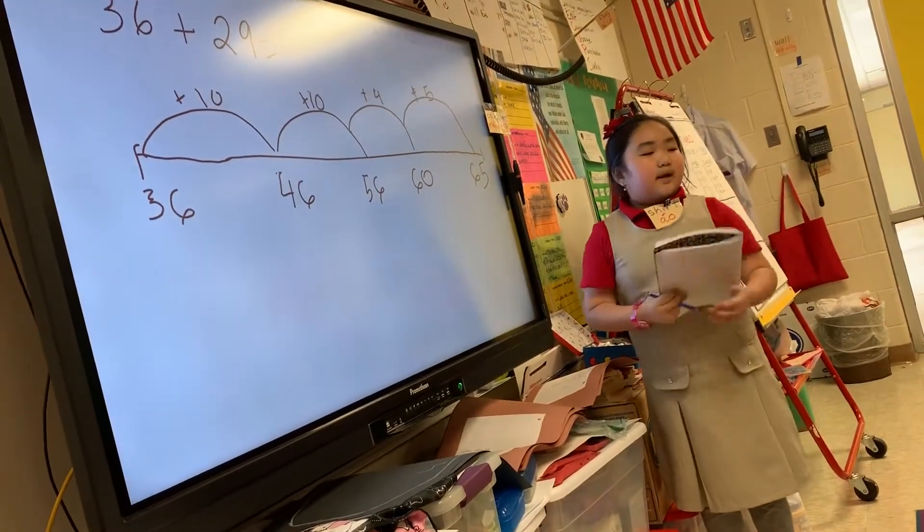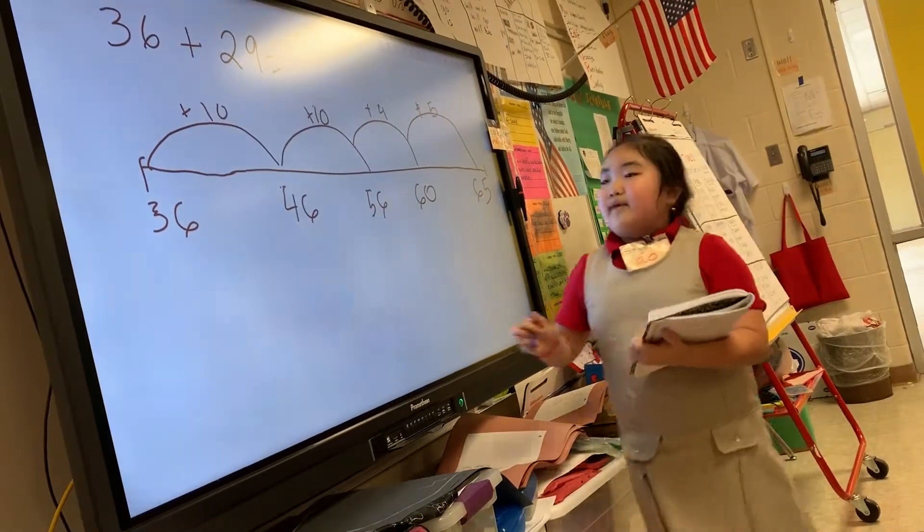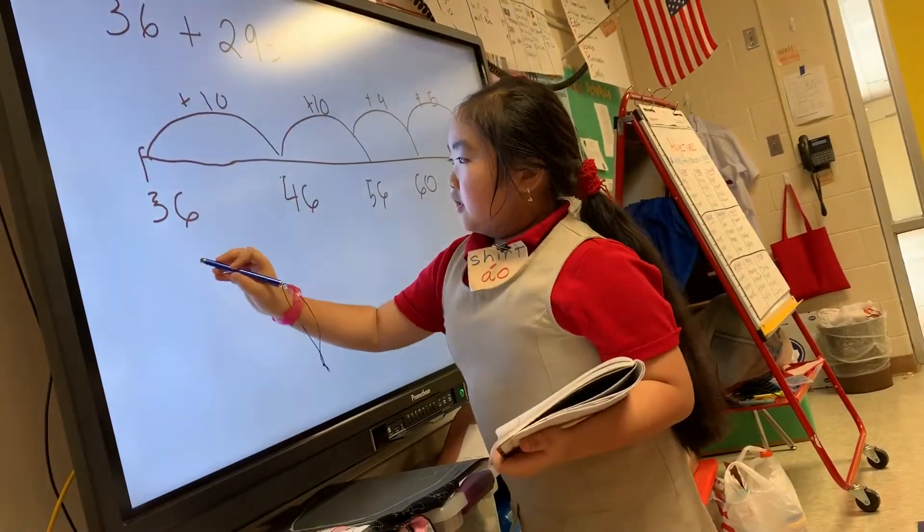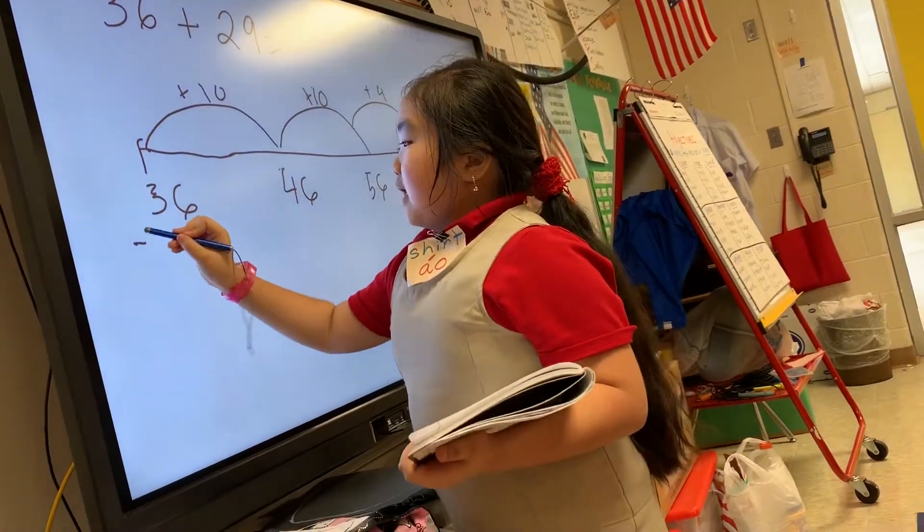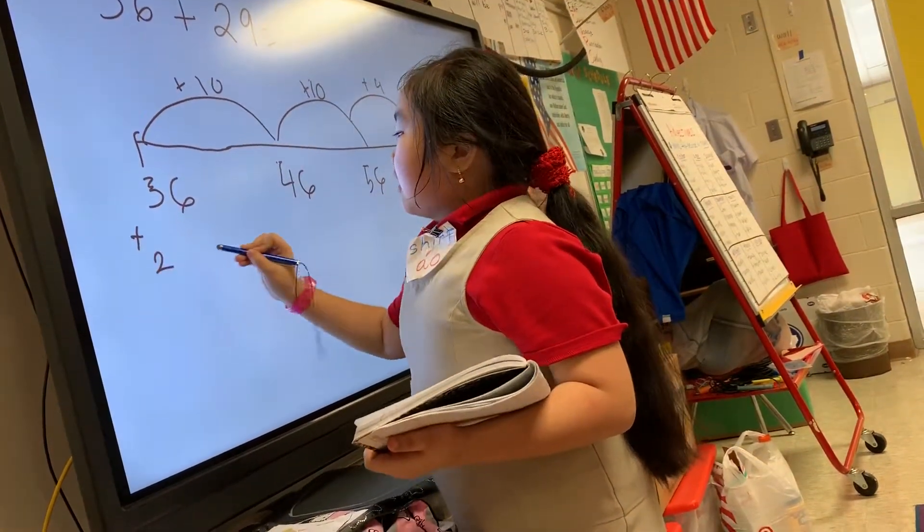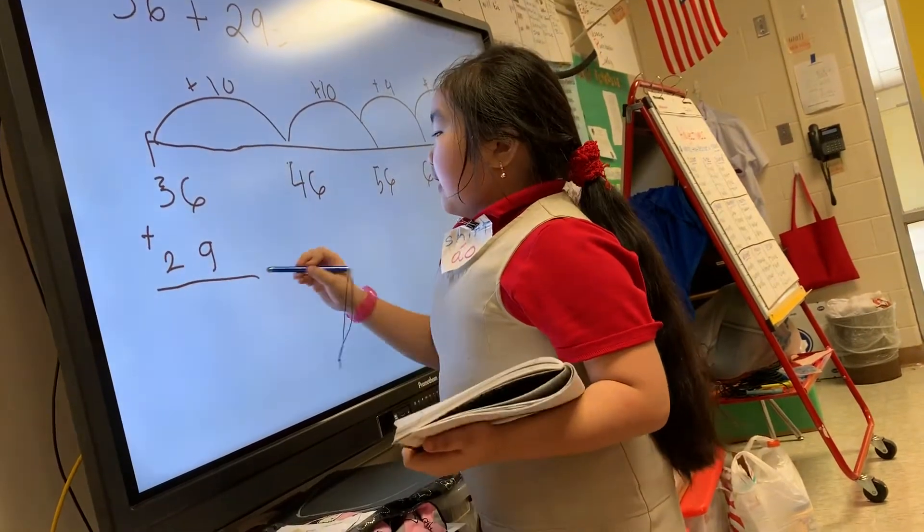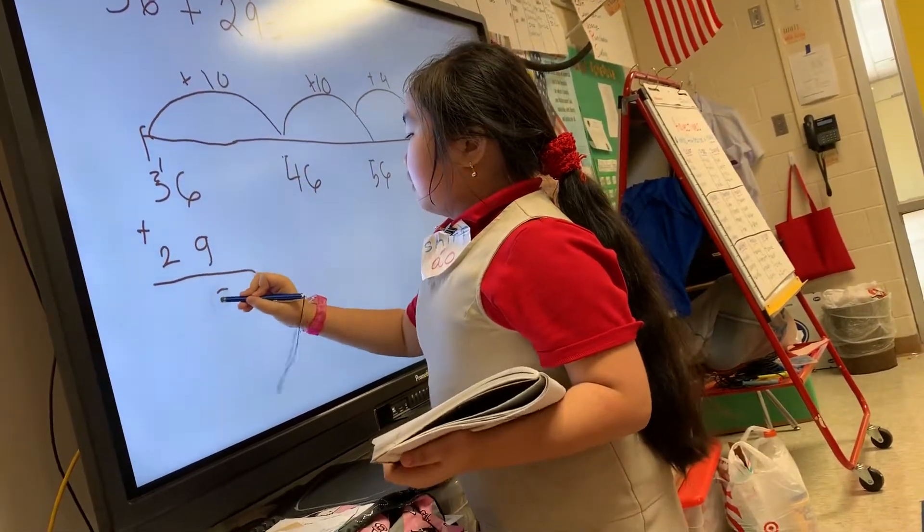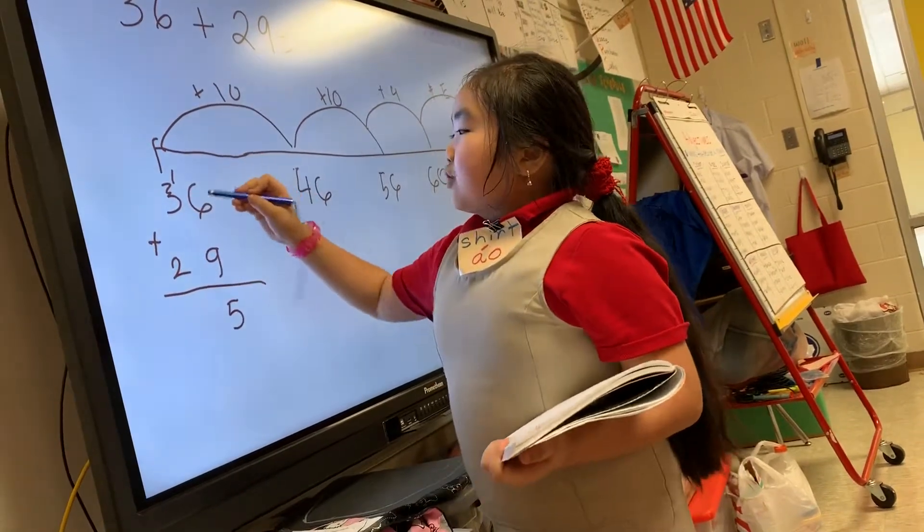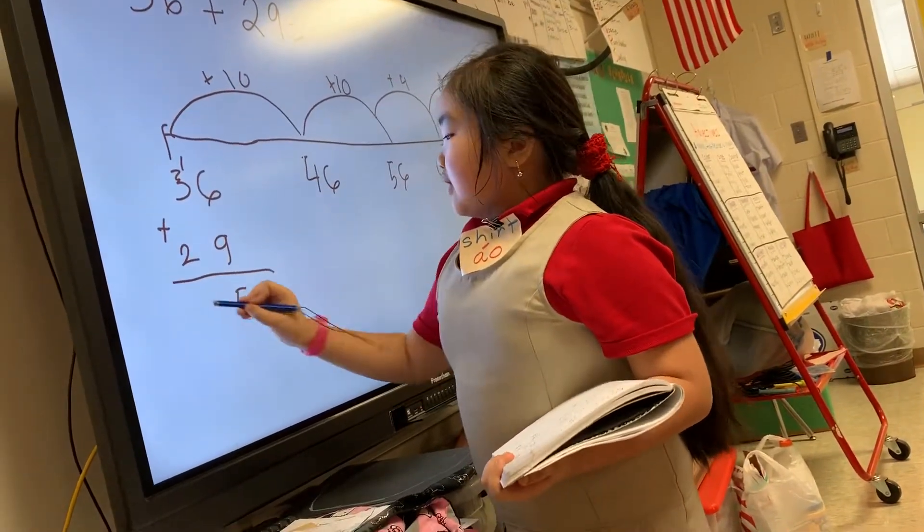And if I want to see my answer is right, I'm gonna write it vertically. So 36 plus 29. 6 plus 9 is 15, so I'm gonna carry the 1. 1 plus 3 is 4, 4 plus 2 is 6, so 65.